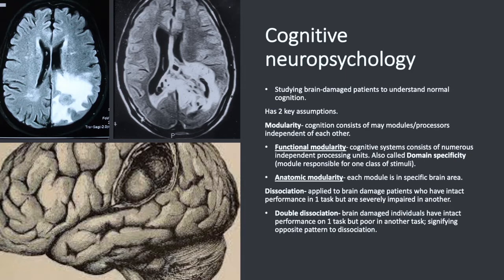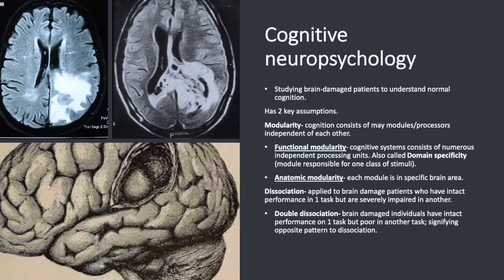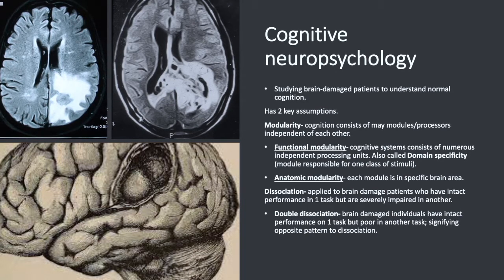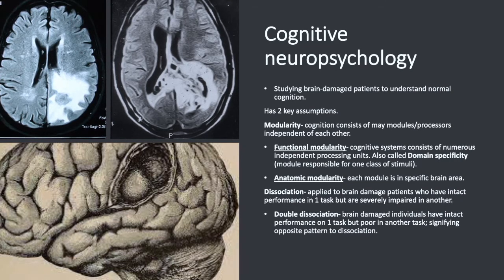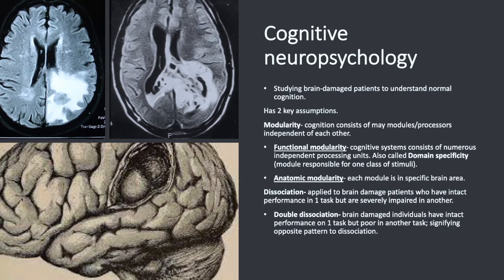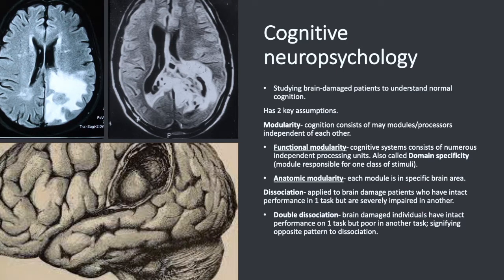The second key assumption of cognitive neuropsychology is dissociation, which is applied to brain damaged patients who have intact performance in one task but are severely impaired in another. One can also have a double dissociation, which is when brain damaged individuals have intact performance on one task but poor ability in another — showing an opposite pattern. For example, one person may be good at processing faces but not objects, while another is good at processing objects but not faces.